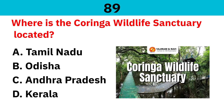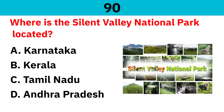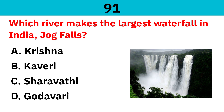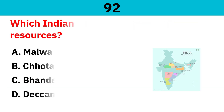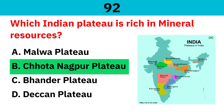Where is the Koringa Wildlife Sanctuary located? Correct answer is Andhra Pradesh. Where is the Silent Valley National Park located? Correct answer is Kerala. Which river makes the largest waterfall in India, Jog Falls? Correct answer is Sharavathi. Which Indian plateau is rich in mineral resources? Correct answer is Chhota Nagpur Plateau.